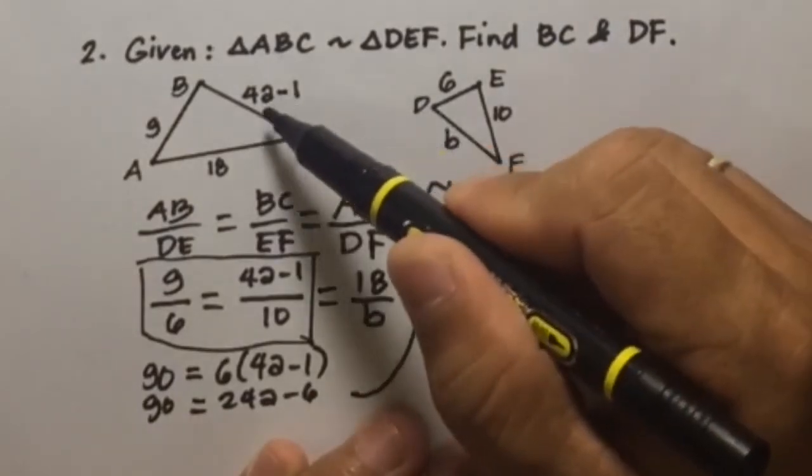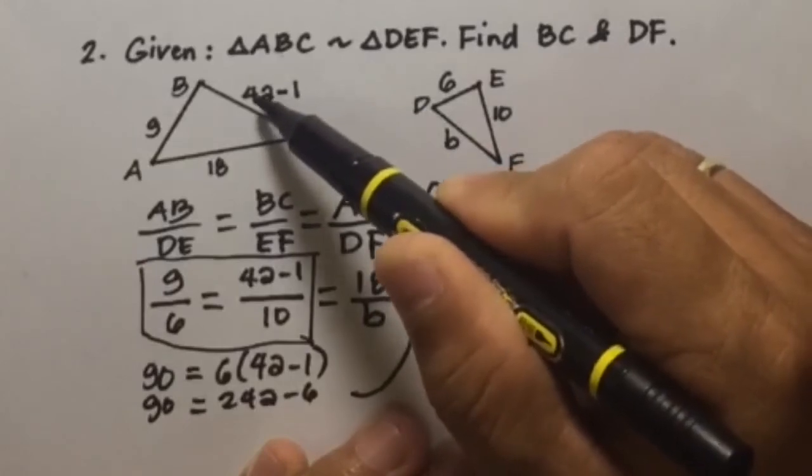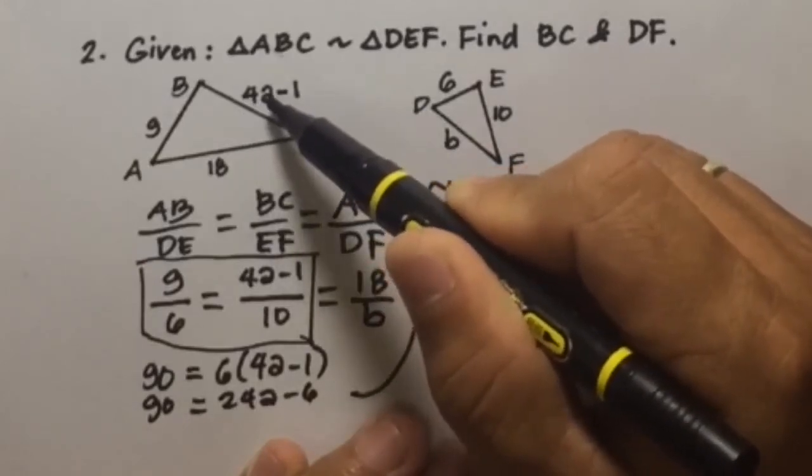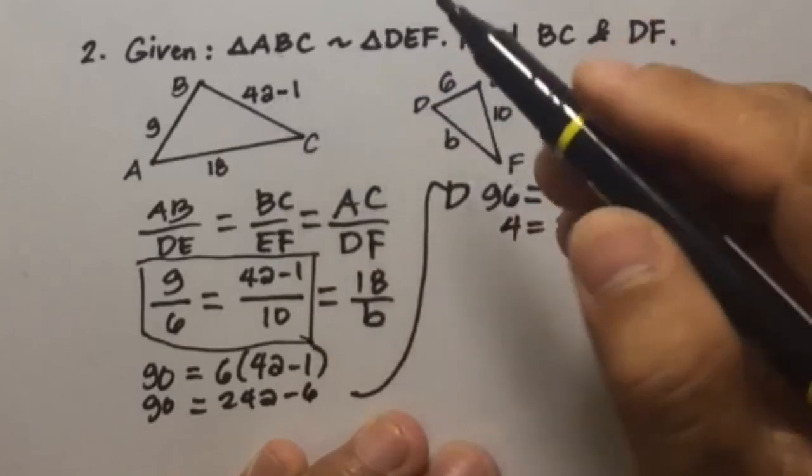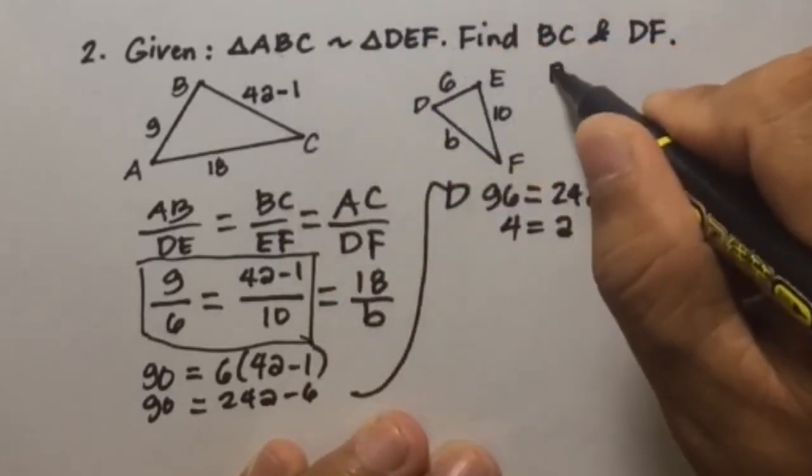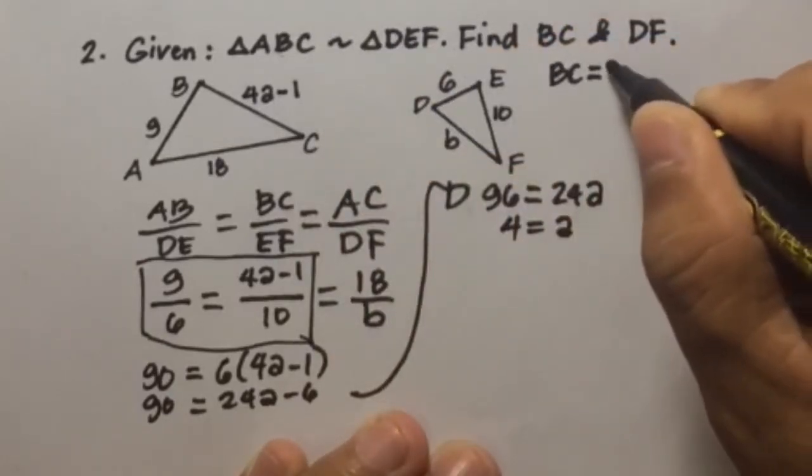Now if A is 4, we can have 4 times 4, 16, minus 1 is 15. So we can have BC equals 15.